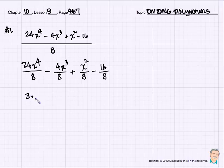So if we simplify this, we end up with 3x to the 4th minus 1 half x cubed plus x squared divided by 8 or 1 eighth, that's the same thing, minus 2.